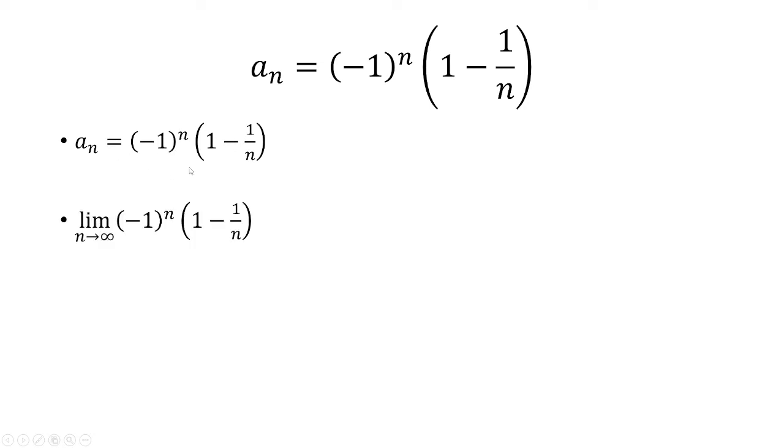To determine if it converges or diverges, we have to look at the limit as n approaches infinity. Here we have two different terms multiplying by each other, so we're going to use a product rule and separate it into two separate limits.